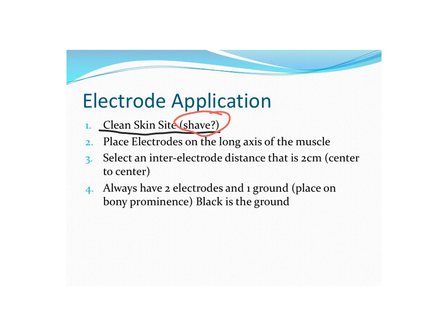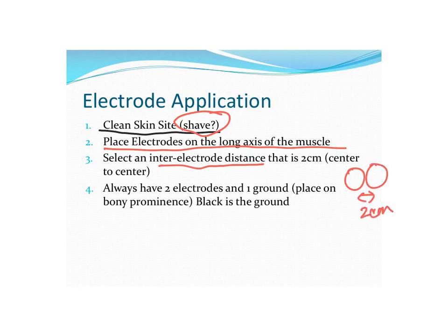You place the electrodes on the long axis of the muscle, and I'll show you an image of typical placements later on. Usually the inter-electrode distance is two centimeters, so place one and then the other within two centimeters. Always have two electrodes and one ground. The ground is usually placed on a bony prominence near the muscle belly so it doesn't impede movement, and typically in setups, black is the ground.